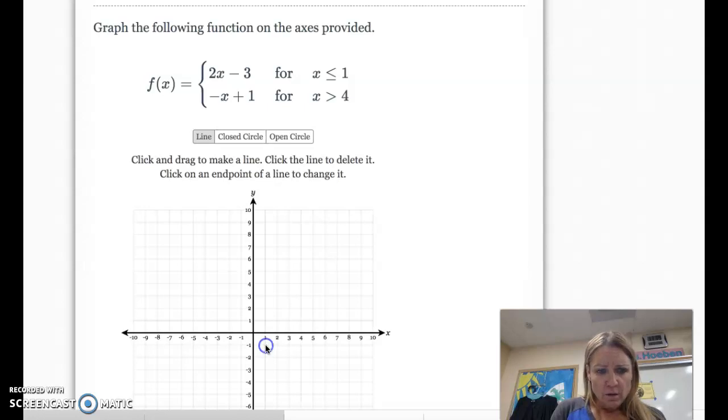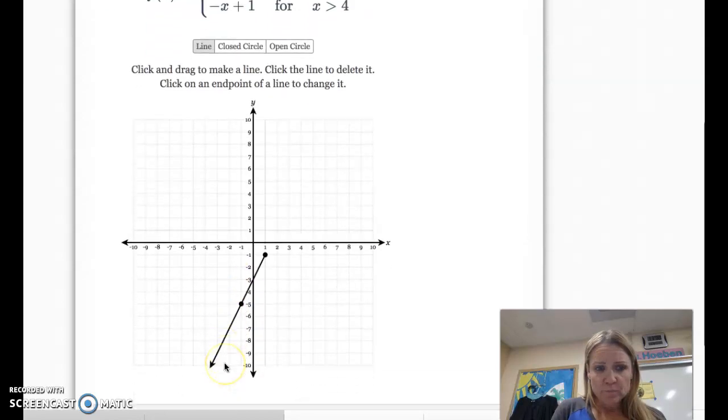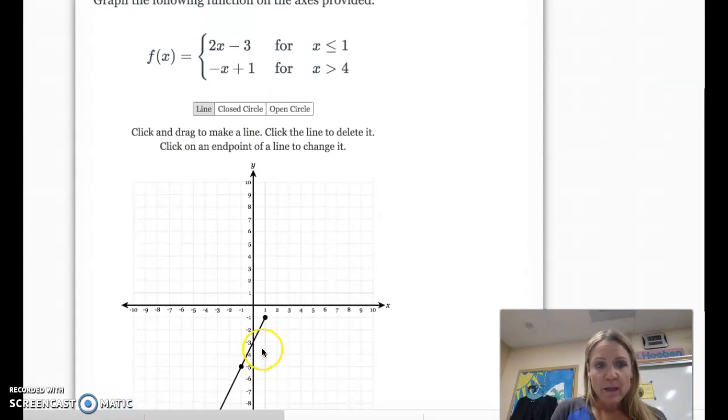So from here, let me get that point better, down 2, backwards 1, down 2, backwards 1. Okay? And then you want the arrow to go this way on that ray. So it looks like that. And then let's see if this is open or closed. Okay, it has the equal part, so it's closed right there. Alright?